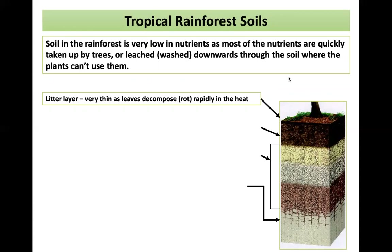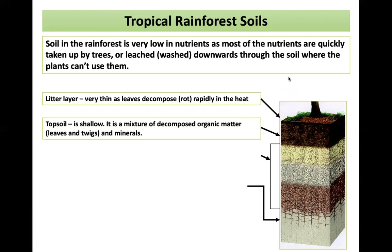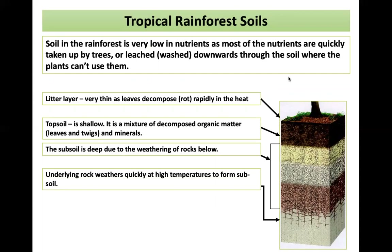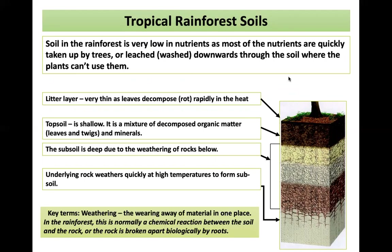The soils in the rainforest are very low in nutrients, as most nutrients are quickly taken up by trees or leached — washed downwards through the soil where plants can't reach them. At the top there is a litter layer, very thin as leaves decompose quickly in the heat. The topsoil is fairly shallow — a mixture of decomposed organic matter, leaves, twigs and minerals. The subsoil is deep due to the weathering of rocks below. A key term here is weathering: the wearing away of material in one place, normally a chemical reaction in the rainforest between the soil and the rock, or the rock is broken apart biologically by roots.